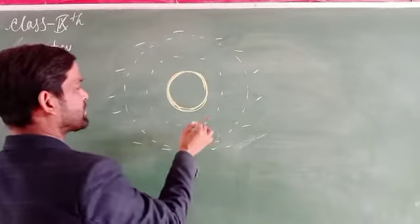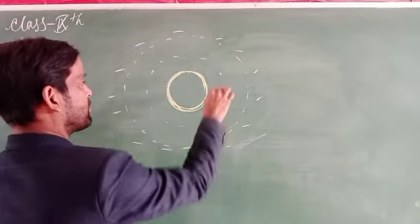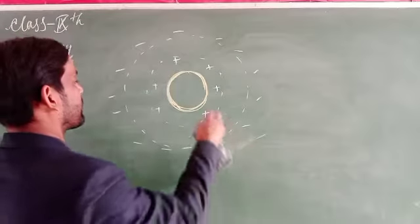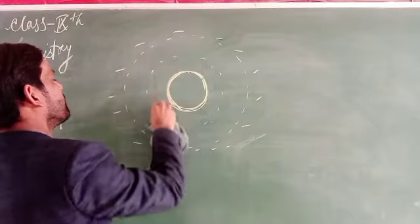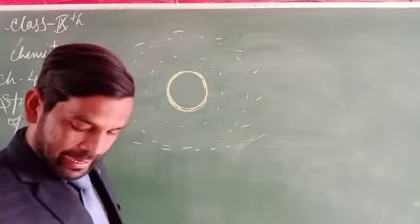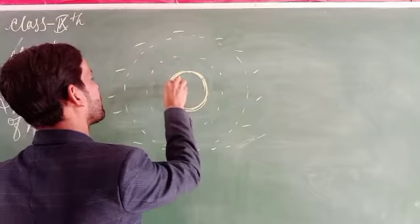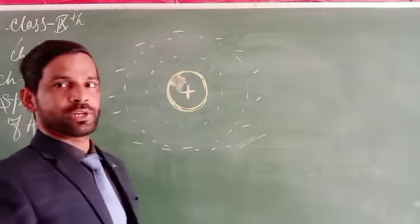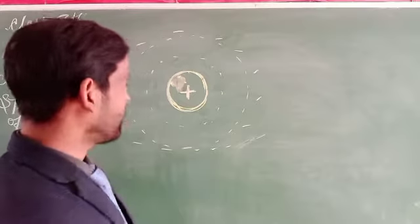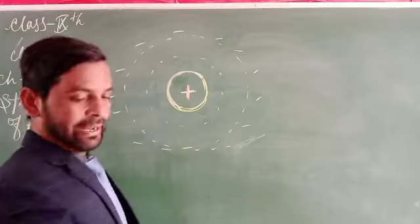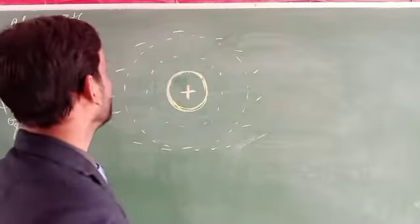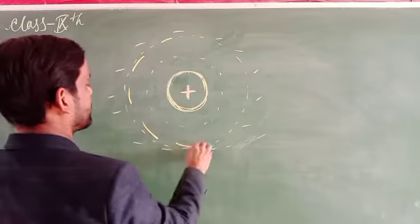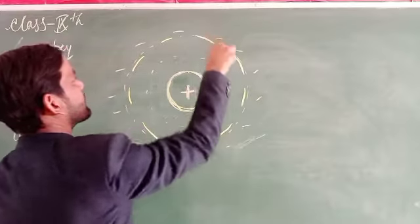Since something is negatively charged on the outside, something positively charged must be inside. This one showing positive charge — it is proved that the electrons revolve around a fixed circular electrical path, also called a circular path or electrical path, in which electrons are revolving around the nucleus.